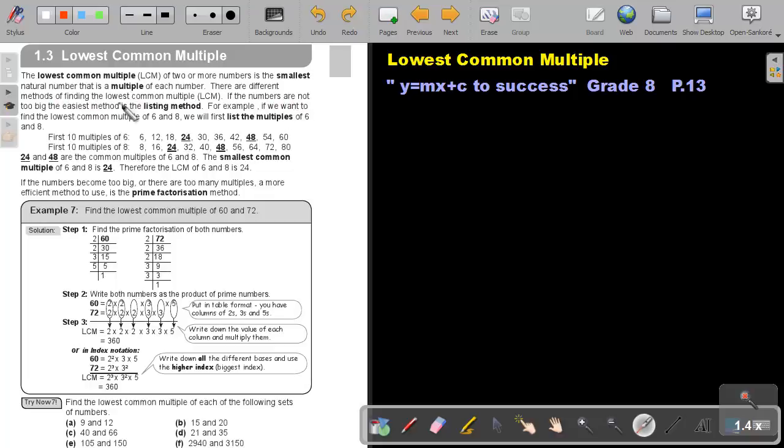If the numbers are not too big, the easiest method is the listing method. I think it's also the method that you did in primary school. For example, if we want to find the lowest common multiple of 6 and 8, we will first list the multiples of 6 and 8. I like to show my students like this: lowest common multiple.